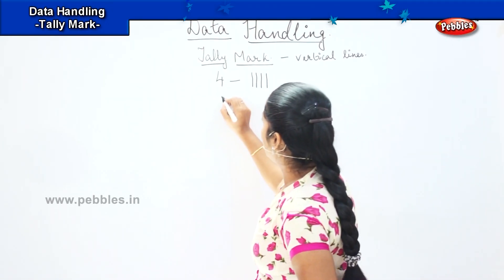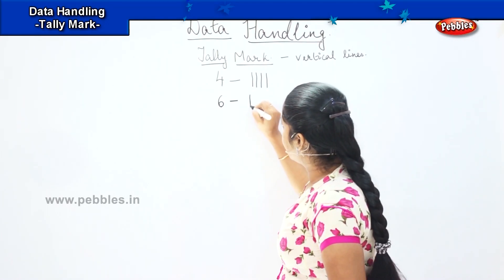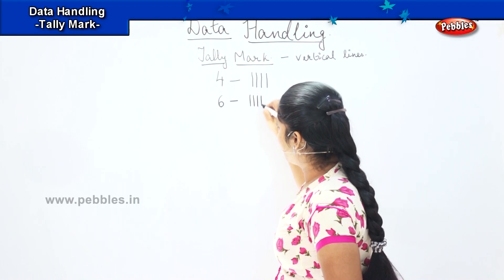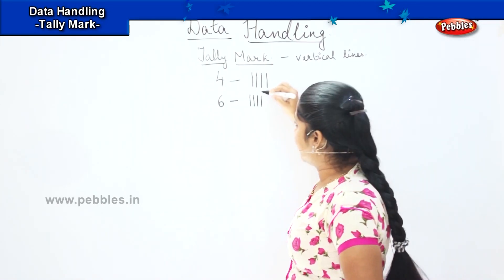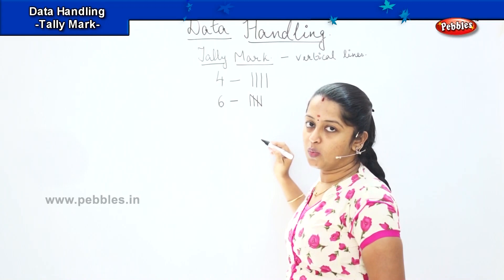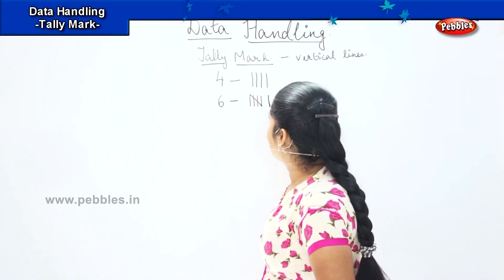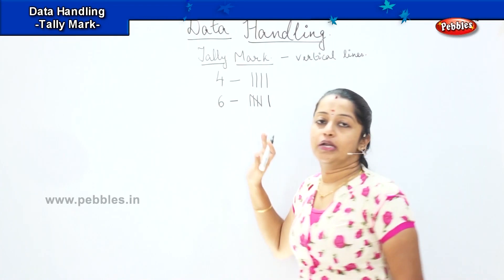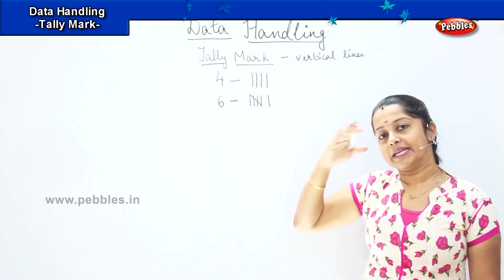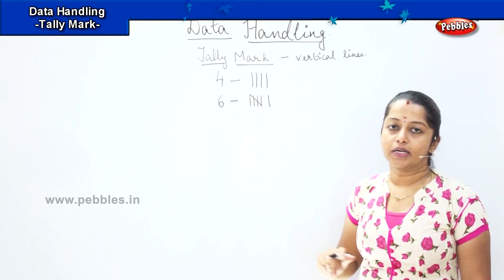Now if I want to do 6, how will I do? 1, 2, 3, 4 and my 5th line should be a slanting line. Always remember it. This is the only thing which we have to keep in mind while doing the tally mark. Always my 5th line will be a slanting line and the remaining lines will be vertical.